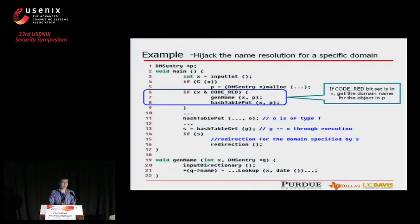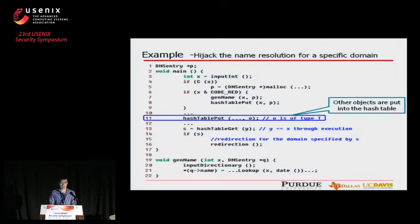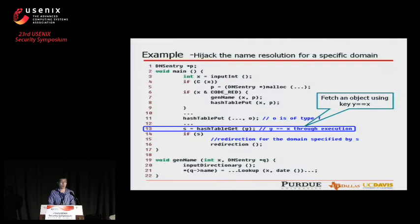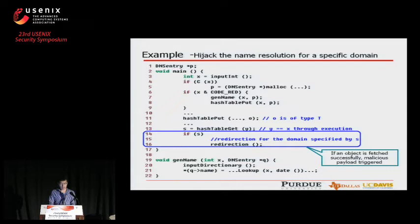There are other objects also put into the hash table at line 11. At line 13, an object will be fetched using key Y, whose value is always equal to X through execution. From line 14 to 16, if the fetching is successful, the redirection malicious payload will get triggered.